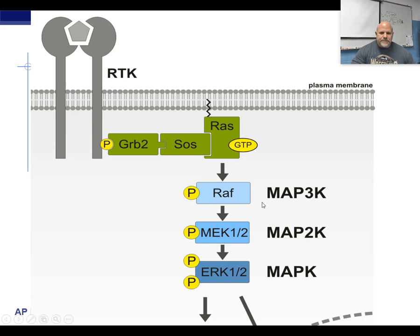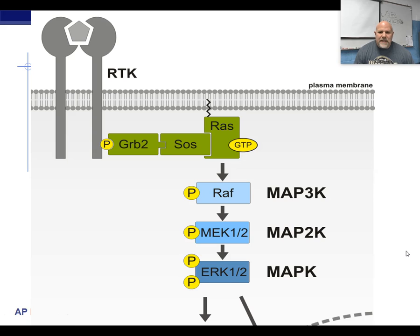Once in a while, one of the cells in the signal cascade will get mutated into a permanently on state. When that happens, the signal to the nucleus is always in the on — let's divide now — mode. So it's got a continuous divide signal even in cells that maybe normally wouldn't be dividing all the time.